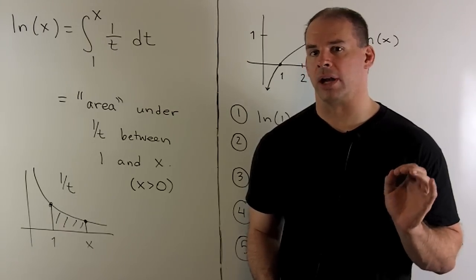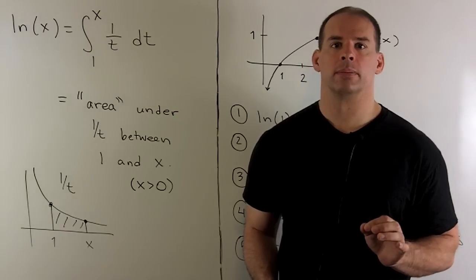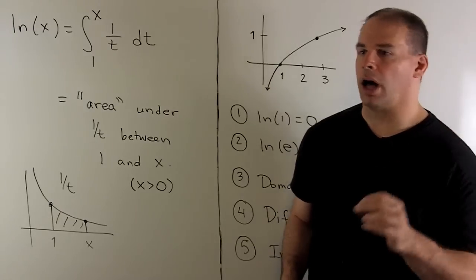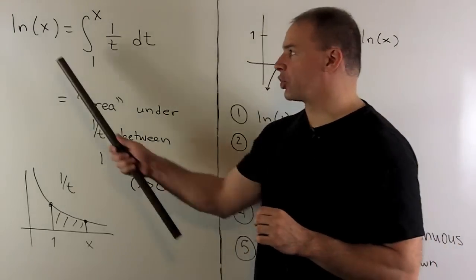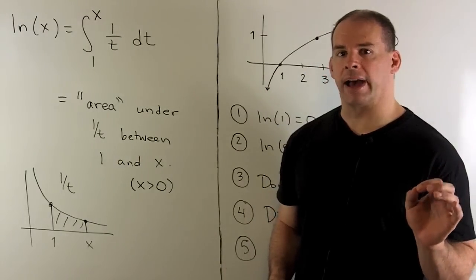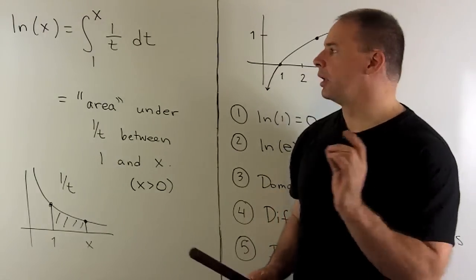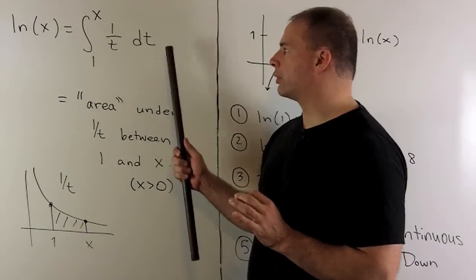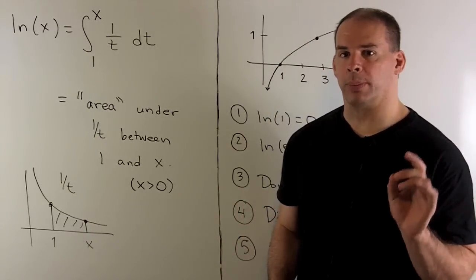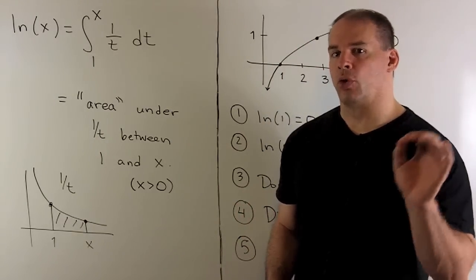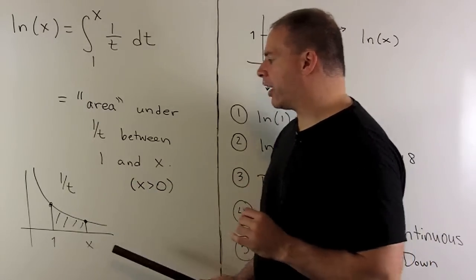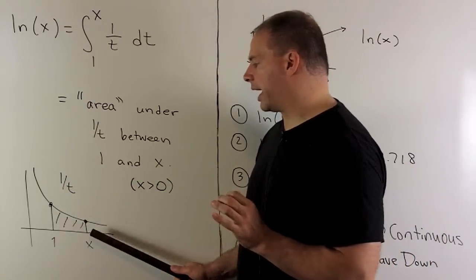Now that we have the exponent rule for natural logarithm, let's take another look at its graph. Recall, natural log of x is defined as the definite integral from one to x of one over t with respect to t. The way we interpret this: take the graph of one over t, then we're going to take the area under the graph between one and x.